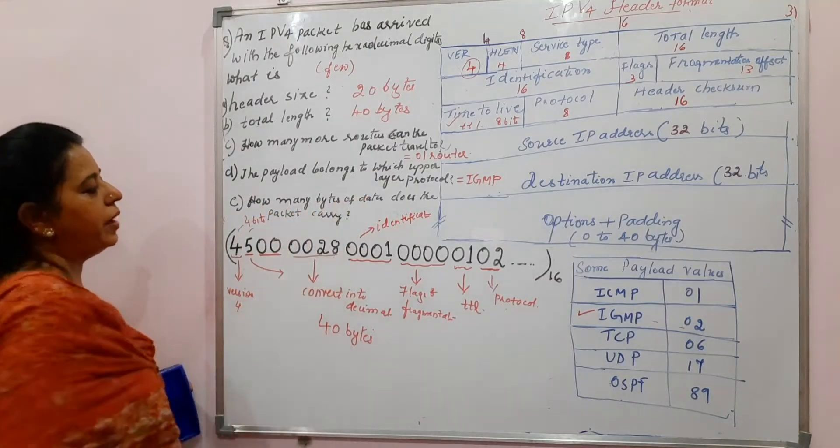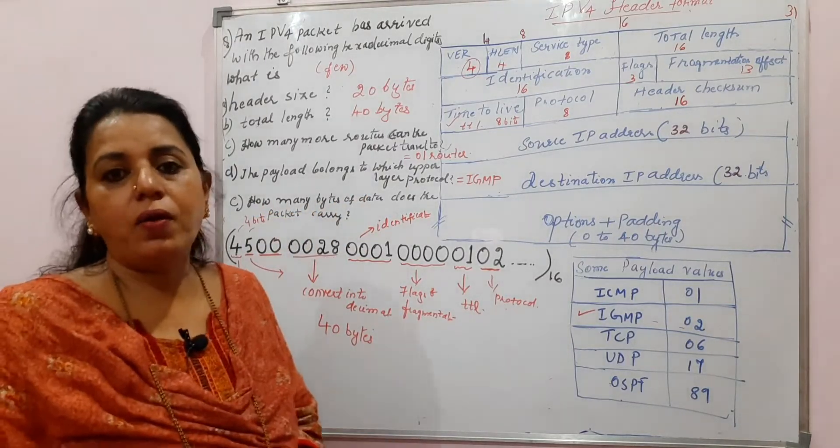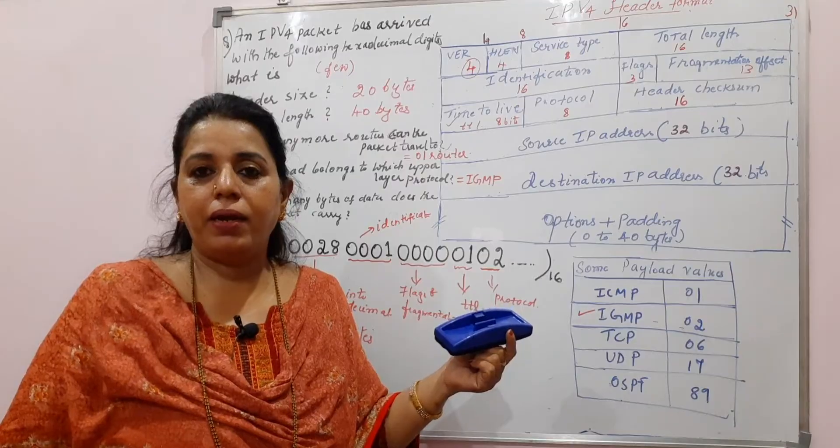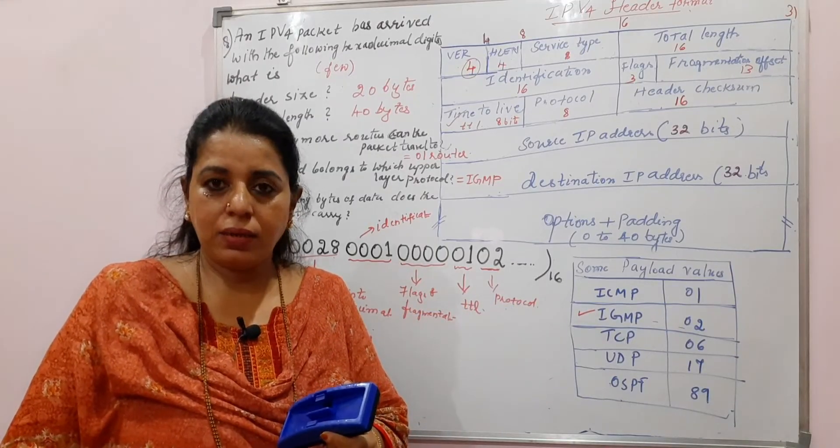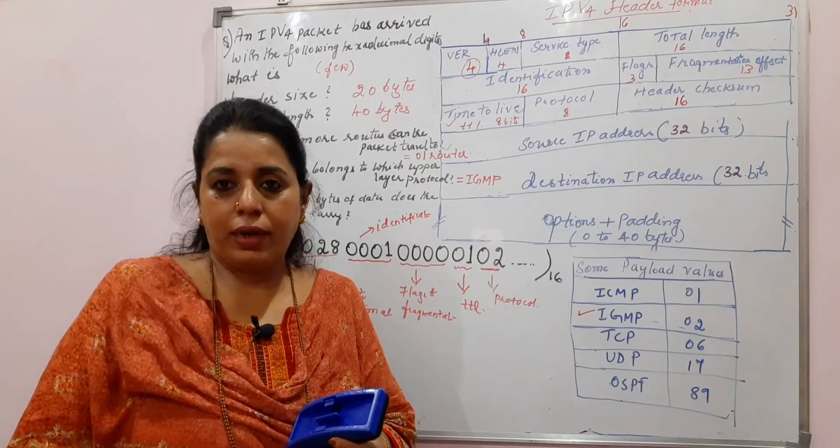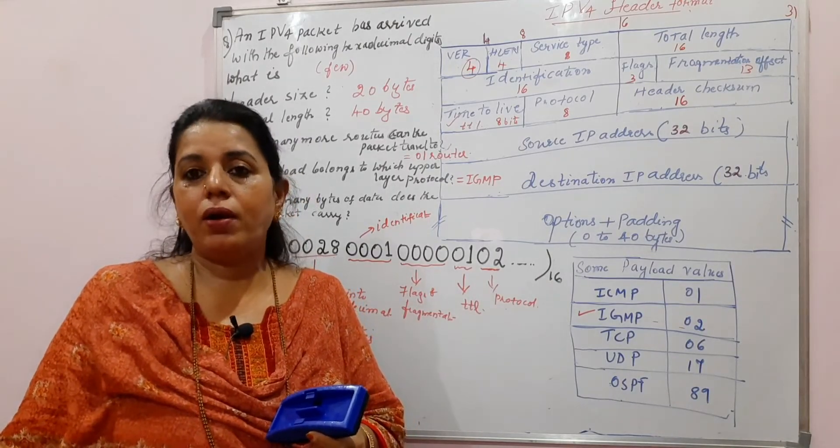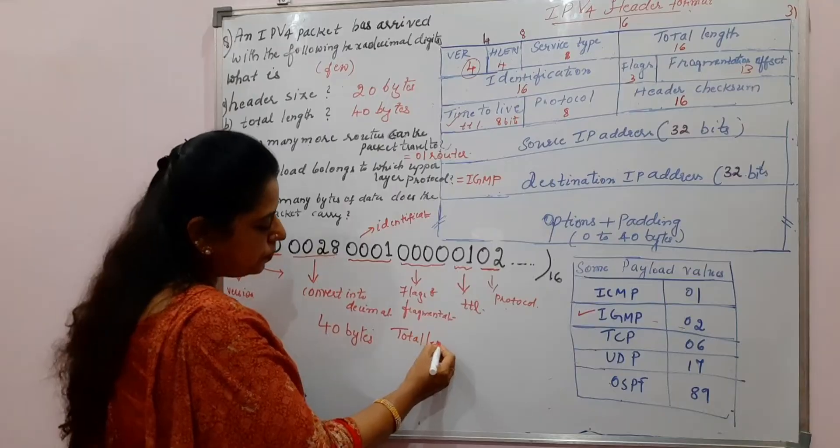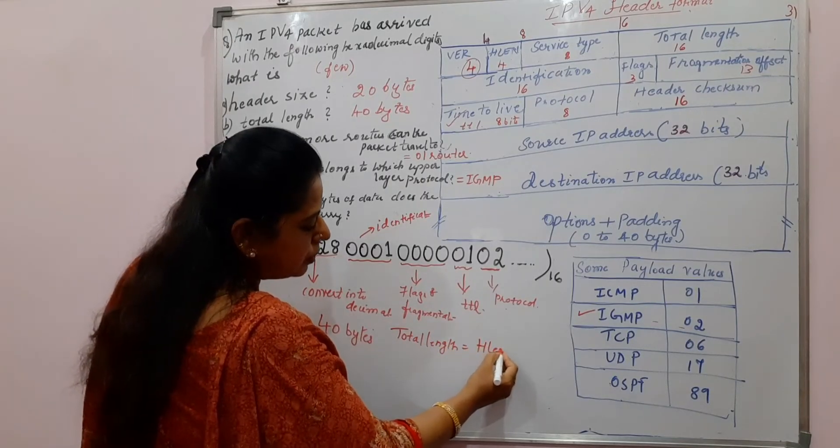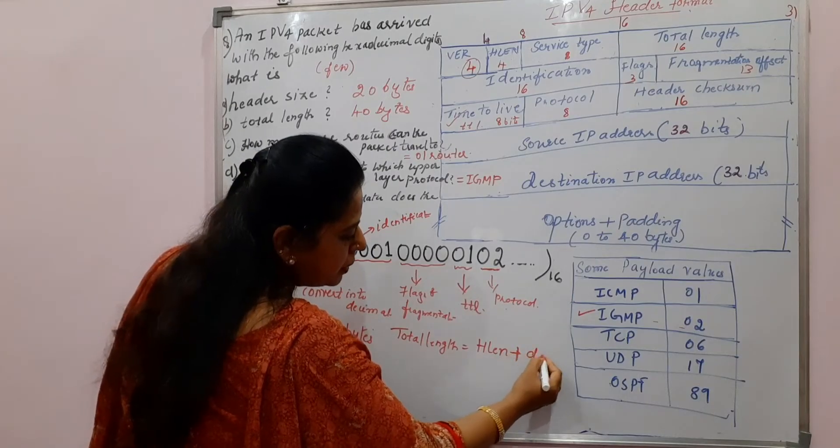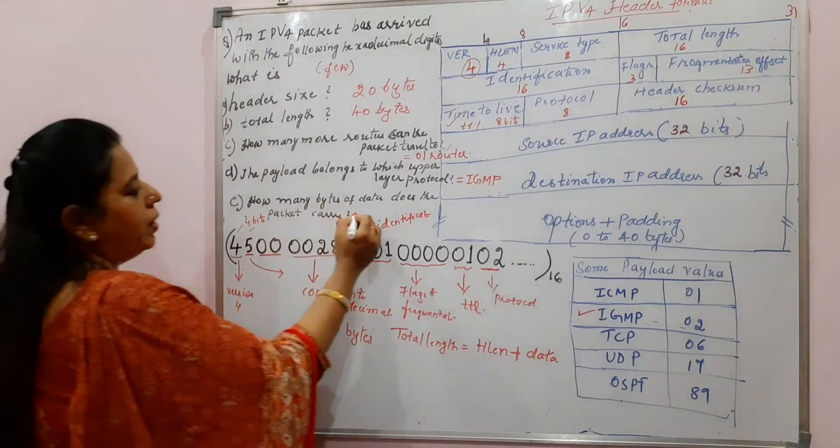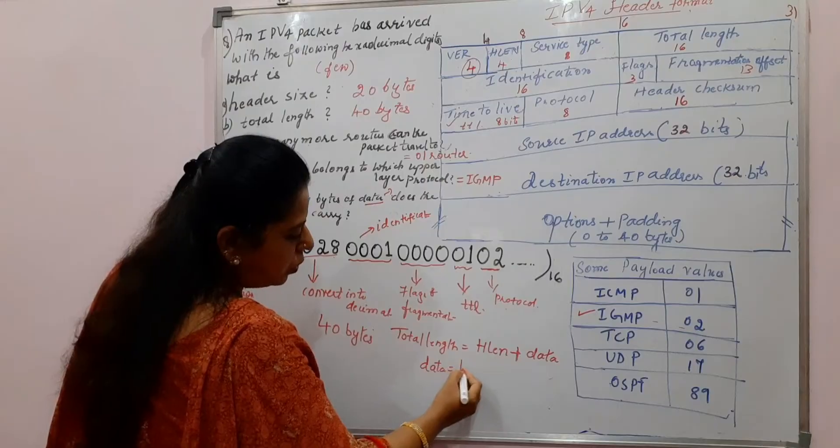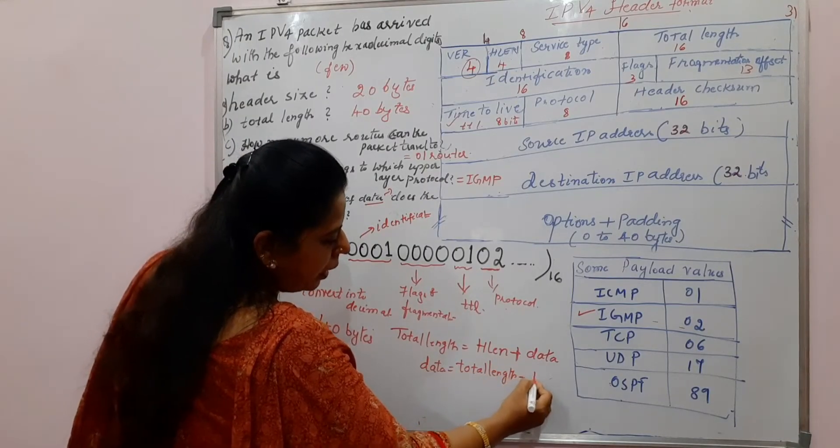The last part of the question is how many bytes of data does the packet carry? Here you need to find out what is the data size? How to find out the data size? Because from the packet format, you can easily come to know the header size. The size of the header and the total length. With these two values, you can find out the size of the data. Always remember, total length is equal to header length plus data. You have to find out here the data. What is the size of the data? The data will be equal to total length minus header length.